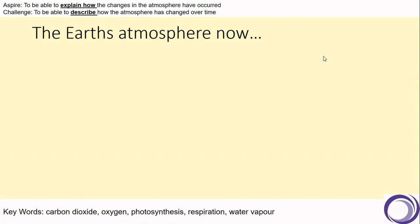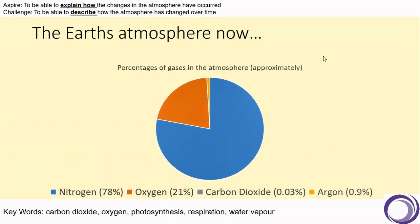Although you will learn in future lessons that humans are having an impact, but for now let's just stick with what we know currently. The Earth's atmosphere is approximately 80 percent nitrogen and approximately 20 percent oxygen, with very small amounts of other gases including carbon dioxide, argon, and water vapour.